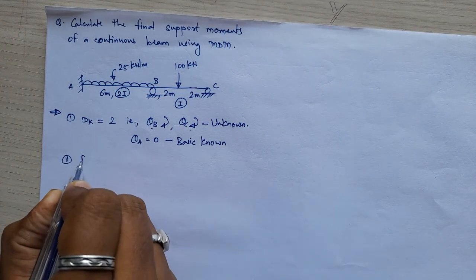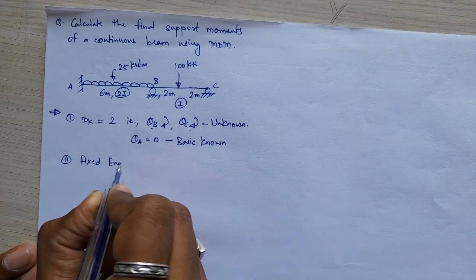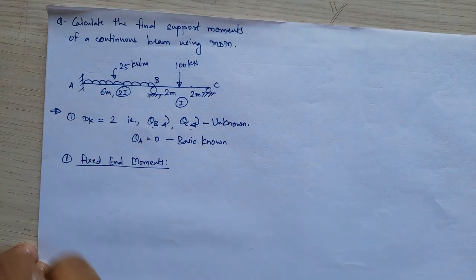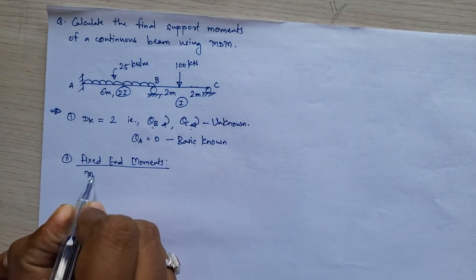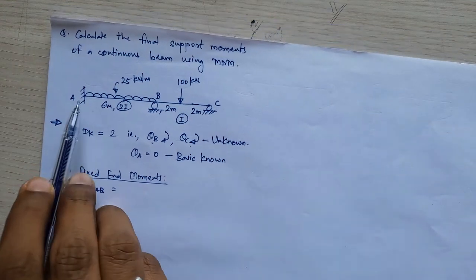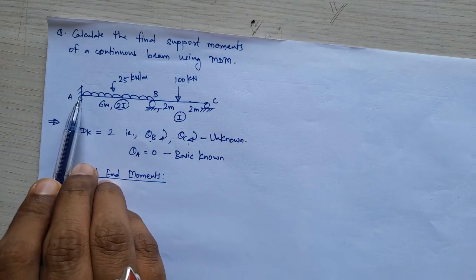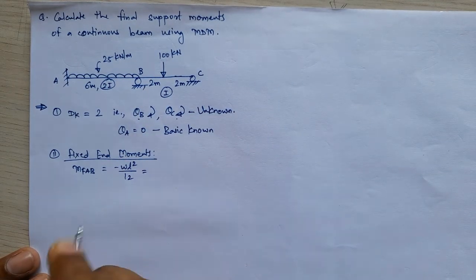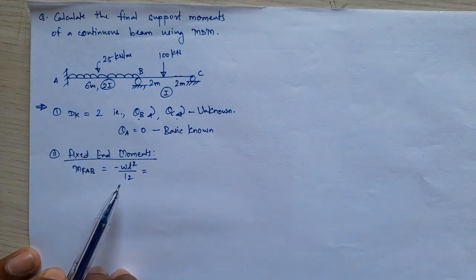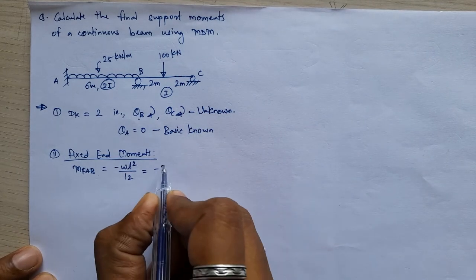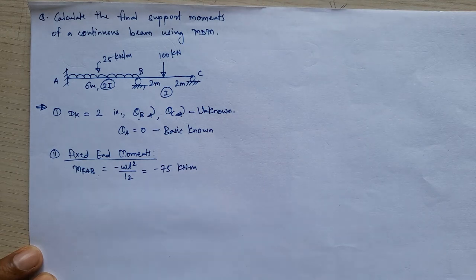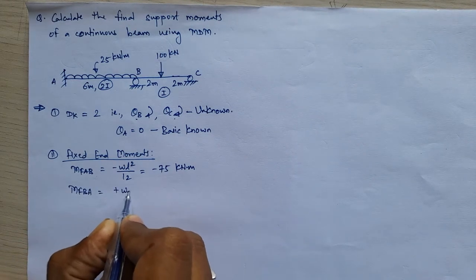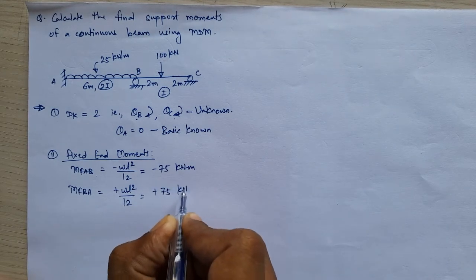The second step remains the same as in the slope deflection method: you have to calculate the fixed end moments. As per the fixed end moment table, the first fixed end moment is MF_AB. Considering both supports as fixed and with UDL given, the fixed end moment equals minus WL squared divided by 12. W is 25 and length of AB is 6, so MF_AB equals minus 75 kilo Newton meters. MF_BA equals plus WL squared divided by 12, giving plus 75 kilo Newton meters.